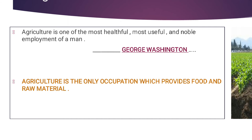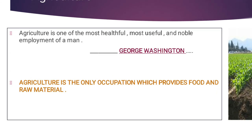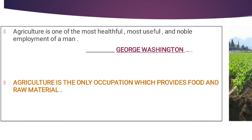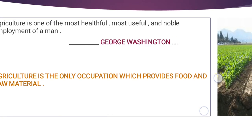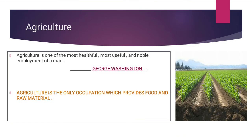I added this particular line to the slide because I liked it — it explains what agriculture is. Agriculture is the only occupation which provides food and raw materials. This is 100% correct. If you do agriculture, it is the only occupation that provides food. No other sector — whether manufacturing industries, secondary or tertiary — can provide food without agriculture.